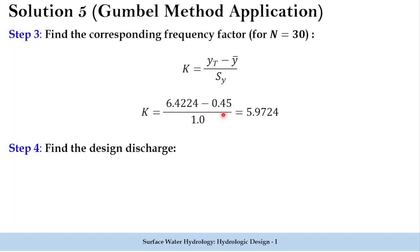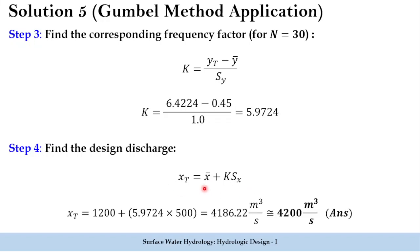In the final step, we find the design discharge using: xT equals x-bar plus k times sx. Here x-bar and sx are the mean and standard deviation provided in the problem. Substituting 1200 plus 5.9724 times 500 gives the design discharge xT as approximately 4200 cubic meters per second.